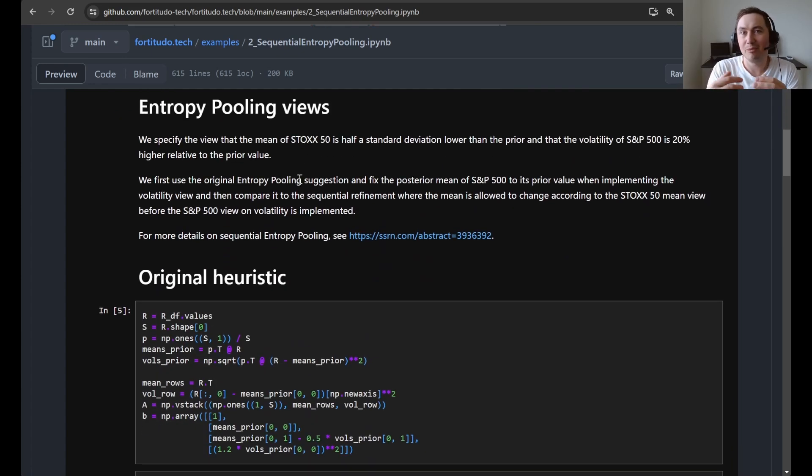Next up we implement some views. So the views that we specify in this case is that the expected return of Stoxx 50 should be the prior minus one standard deviation or one half standard deviation. And then in relation to S&P 500 we say that the volatility should be 20% higher than the prior volatility.